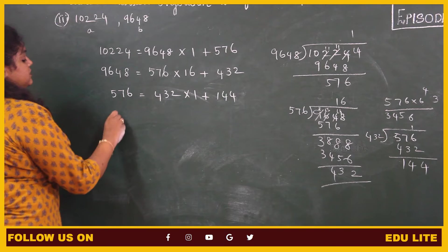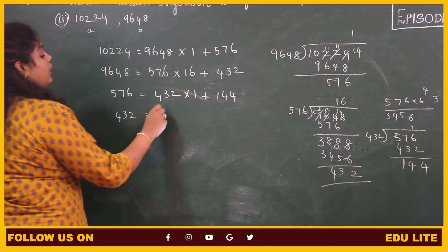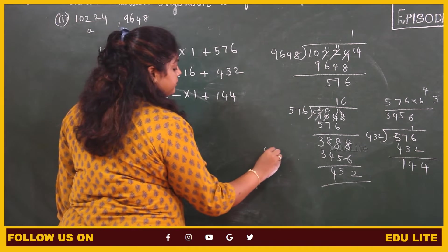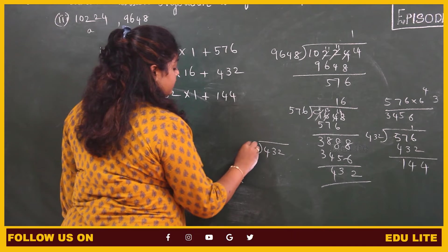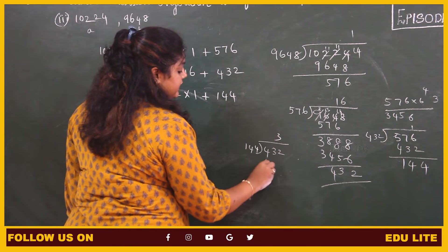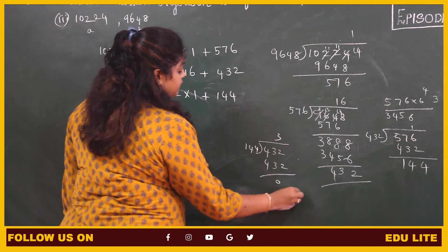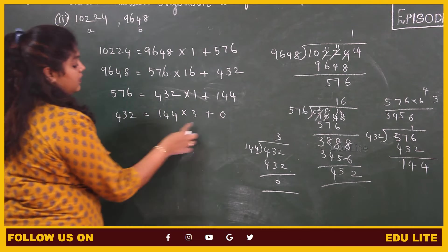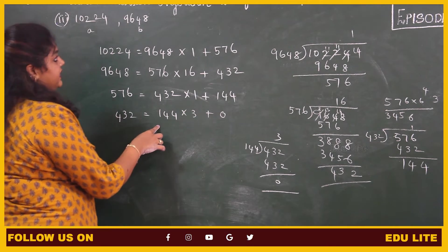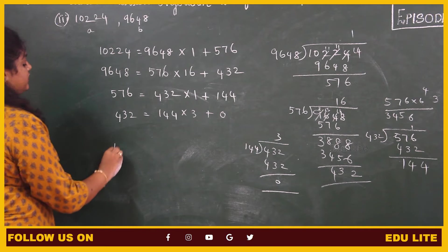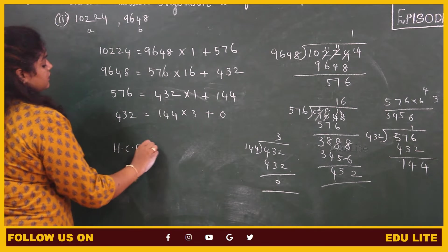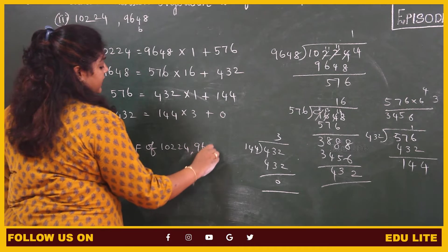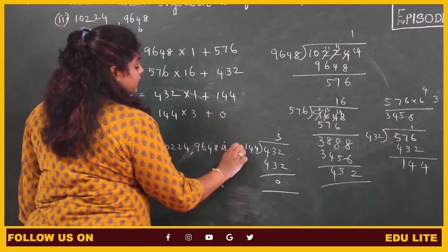Again the remainder is not 0, we have to proceed. 432 is the dividend and 144 is the divisor. So 432 divided by 144: 3 times it will give us 432. So 144 into 3 plus 0. We got the remainder as 0, the divisor in that step will be the HCF of the given numbers. So HCF of 10224 and 9648 is 144.